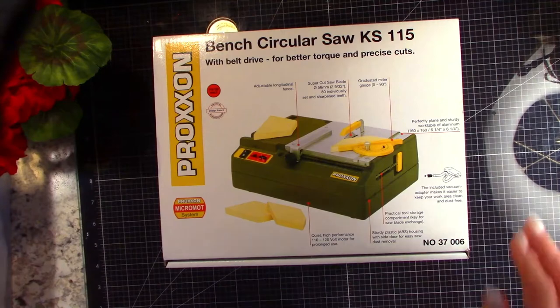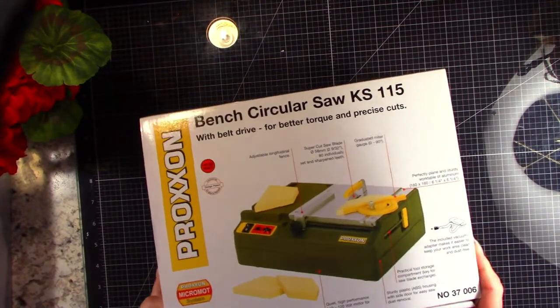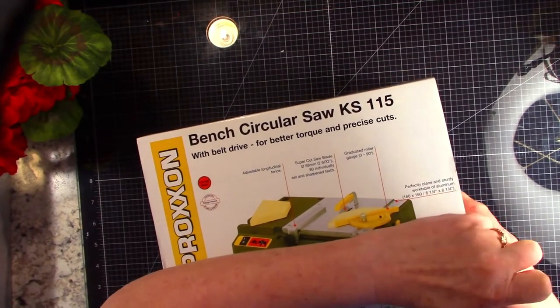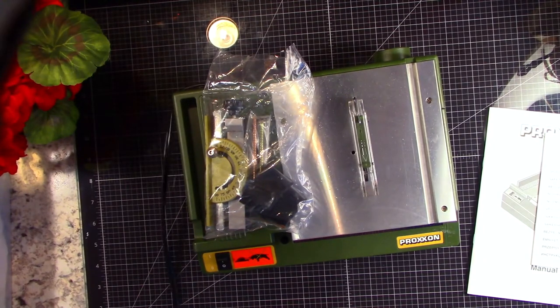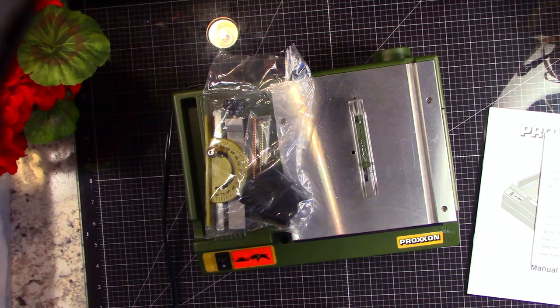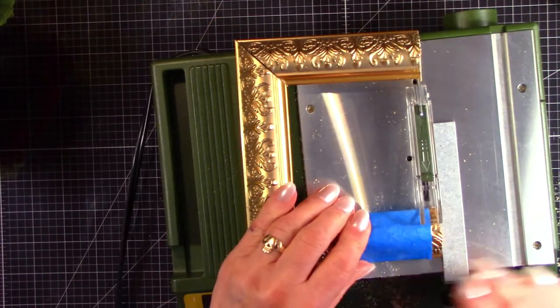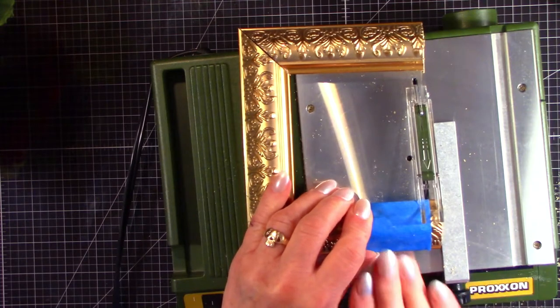This is our Proxen Tabletop Bench Circular Saw for Craftwood. Today we're going to use this for the first time. Each fireplace measures four inches, so on one twelfth scale that would be a four foot fireplace.